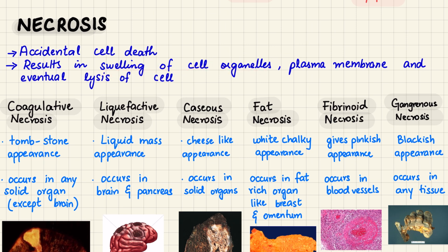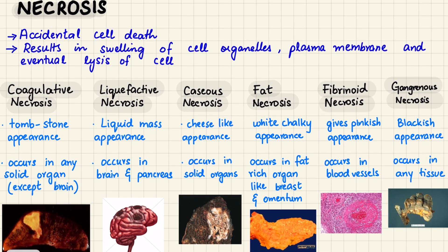First we'll discuss necrosis — accidental or uncontrolled cell death. It results in swelling of the cell organelles, plasma membrane damage, and eventual lysis of the cell. Coagulative necrosis is the most common type and usually occurs in solid organs like the heart, kidneys, and liver — basically anywhere except the brain. It happens because of ischemia, leading to denaturing of proteins. The affected tissue retains its shape and structure for a while, giving it a tombstone appearance as if the cells are still there but dead.